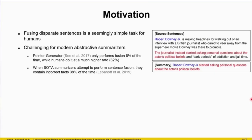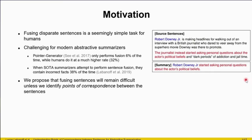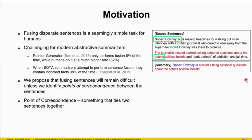Here's an example of pointer generator generating an incorrect fusion. It says that Robert Downey Jr. started asking personal questions, which is obviously incorrect. We propose that fusing sentences will remain difficult unless we identify what we call points of correspondence between the sentences. We define this loosely as something that ties two sentences together. In our case, one thing that ties these two sentences together is the entity Robert Downey Jr., which is referenced in both sentences, and the British Journalist, which is represented in both sentences.